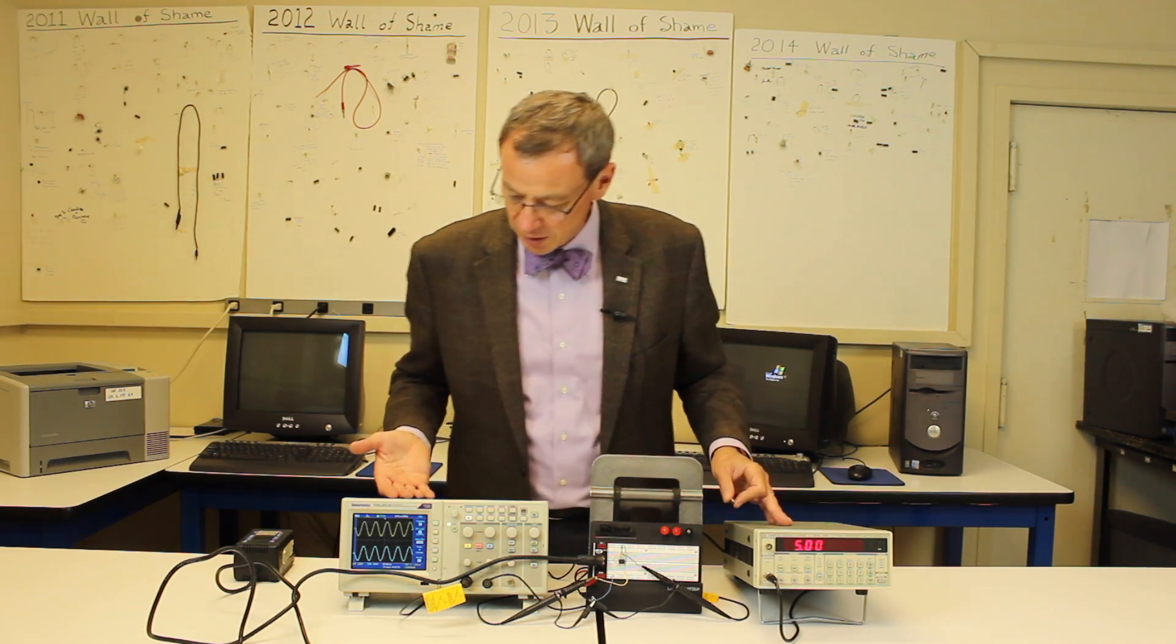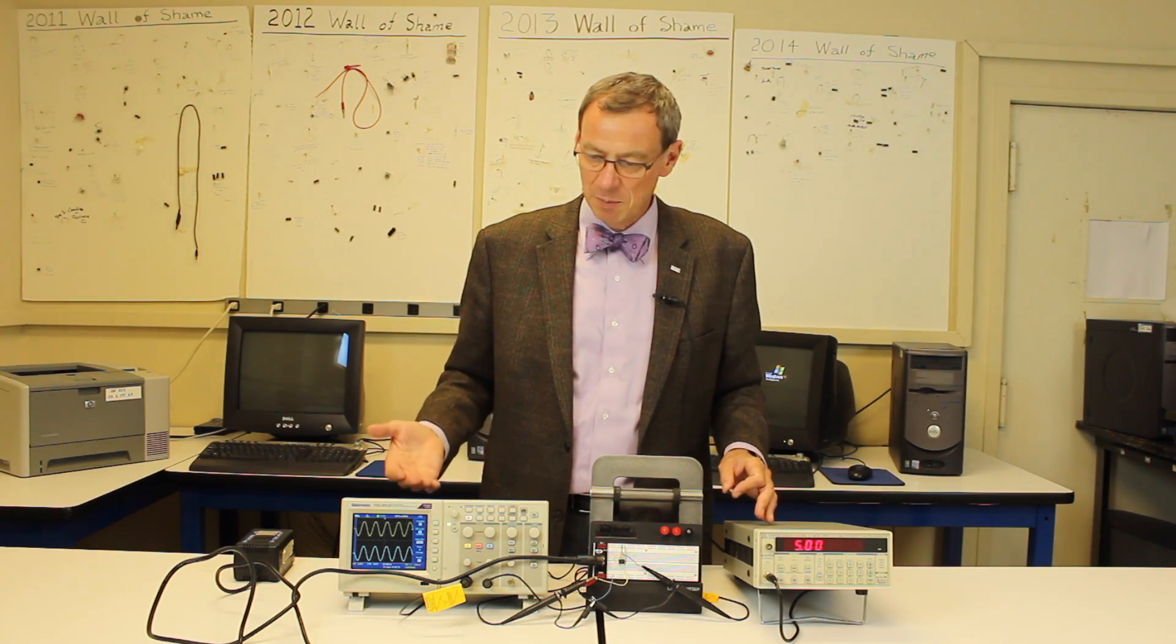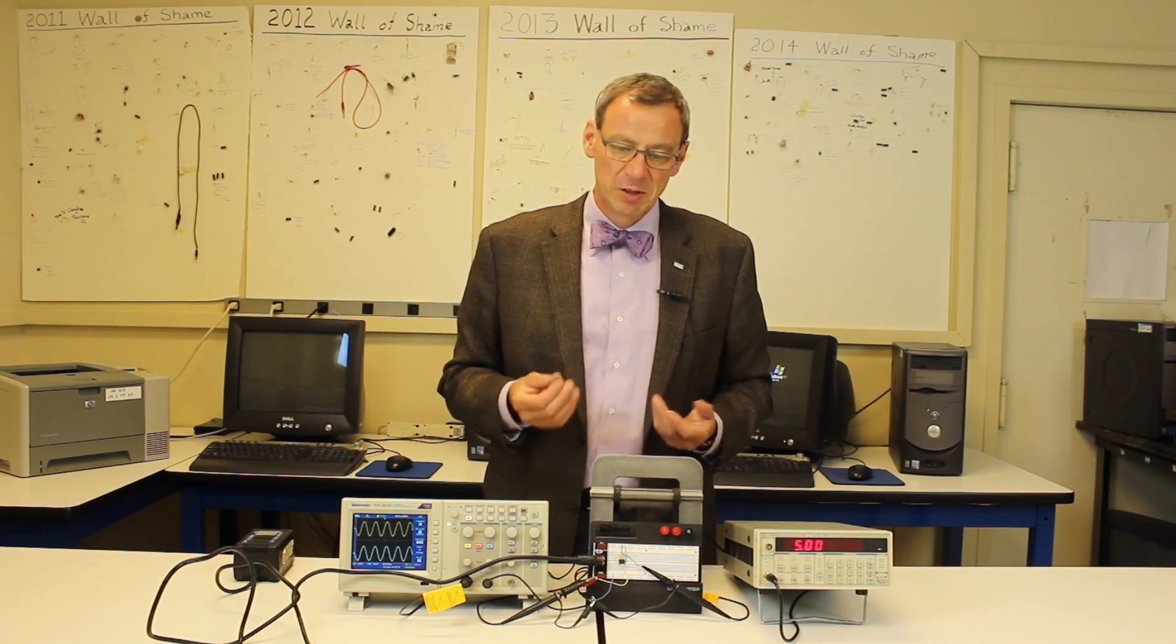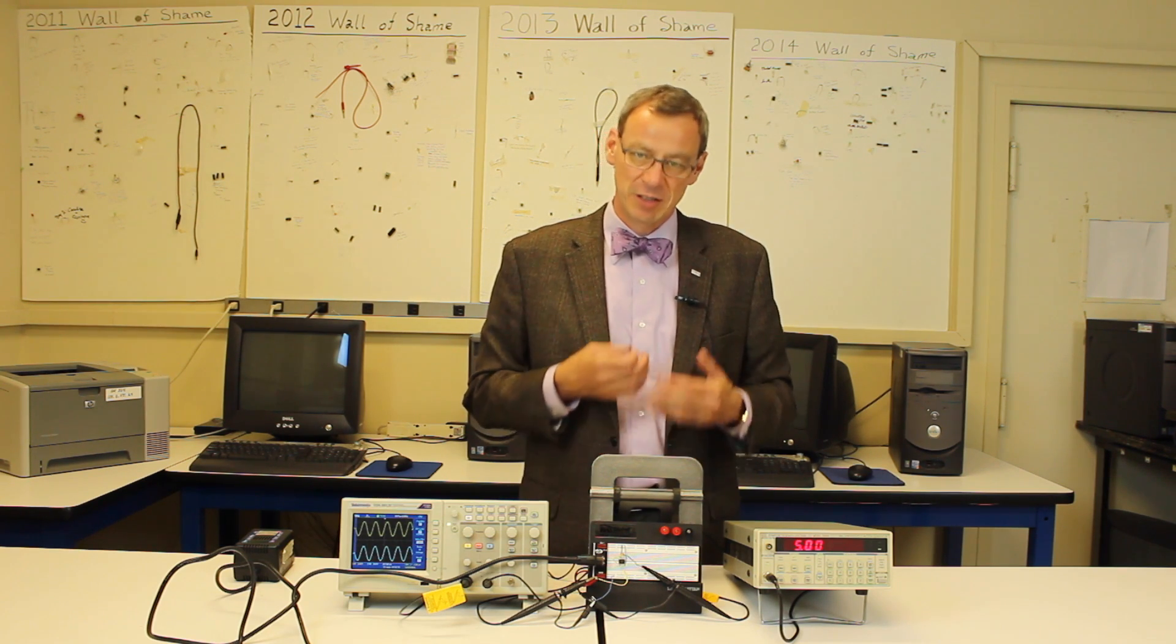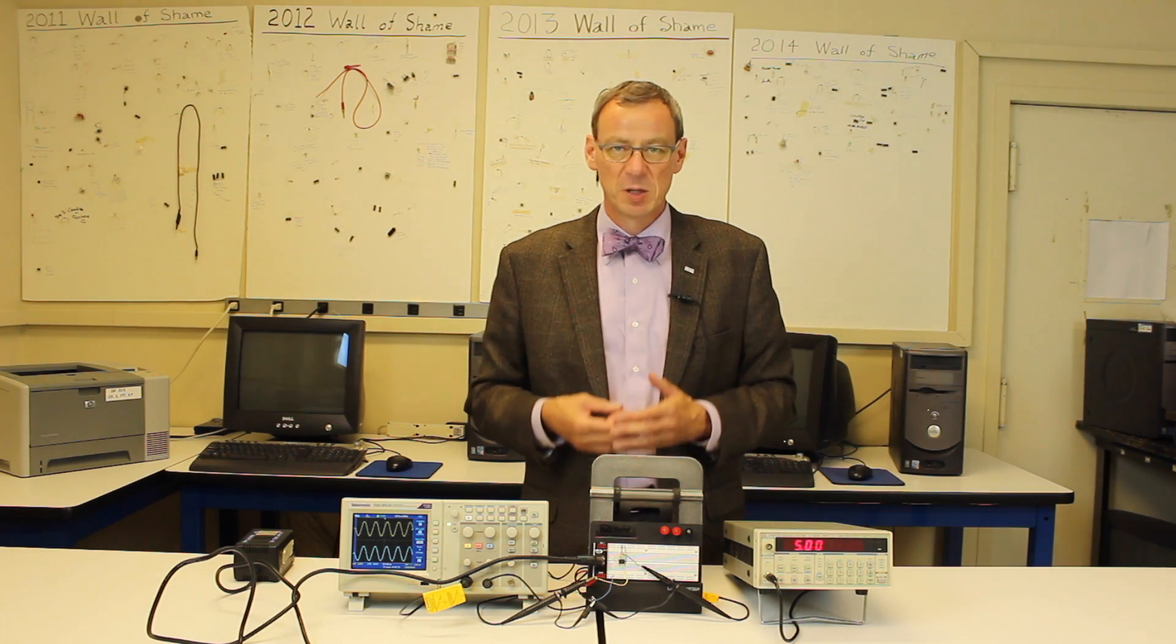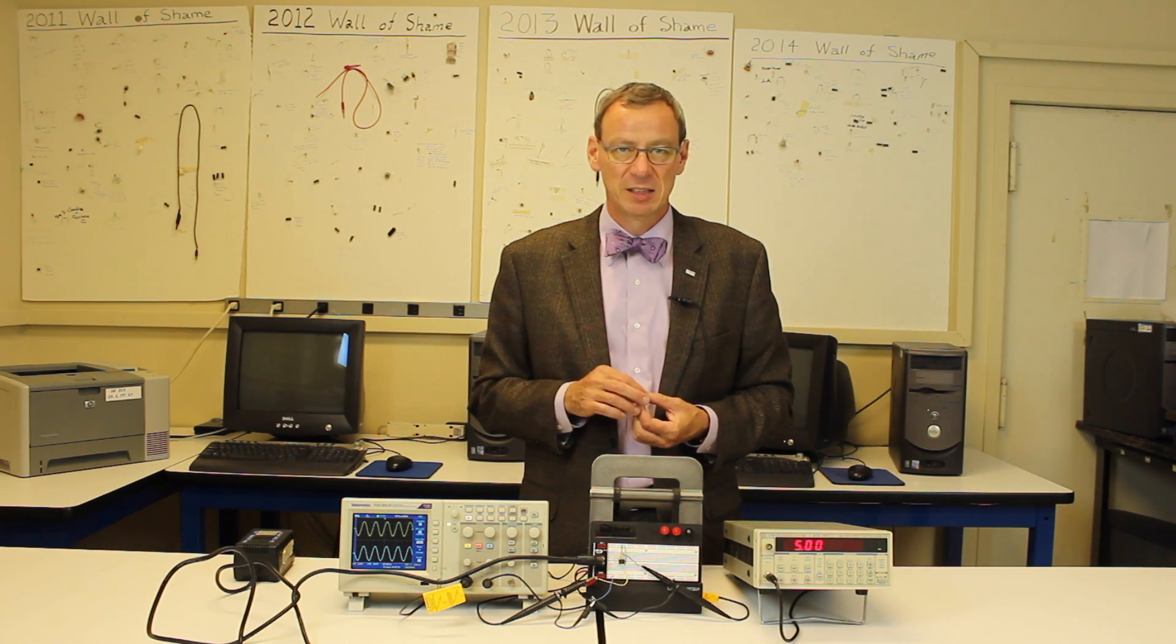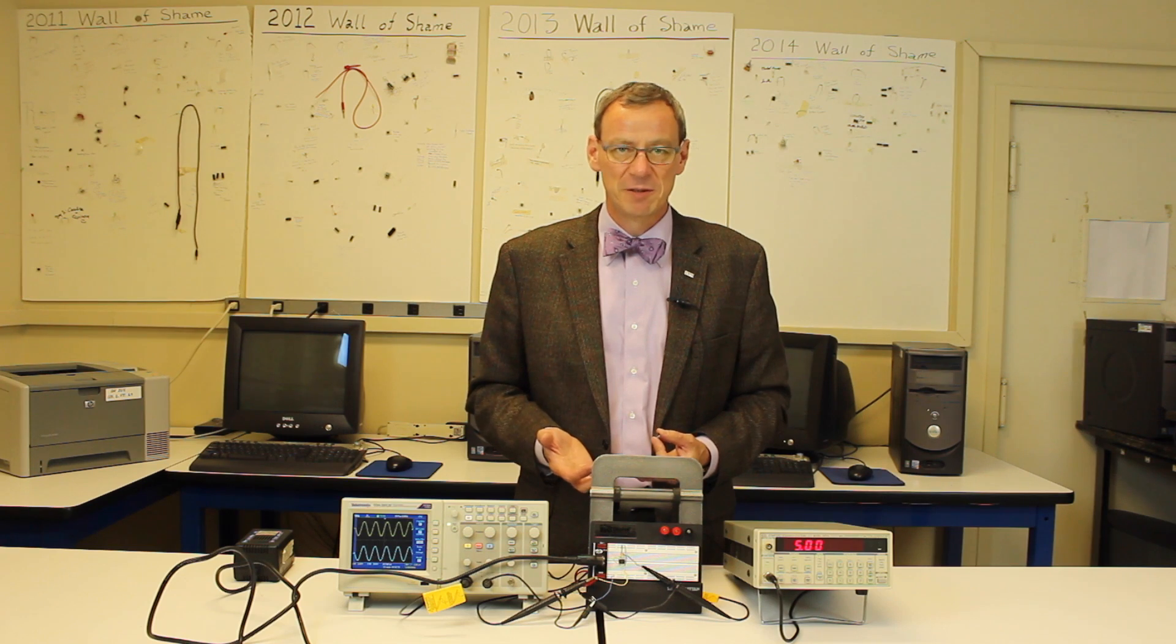You can sort of see it on the scope here, we'll see it better when we zoom in, but the output is a copy of the input. Similar to what the transistor emitter follower circuit does, the op-amp follower circuit has an enormous input impedance, virtually no output impedance, and makes a copy of the signal. And so we'll be measuring the properties of this.